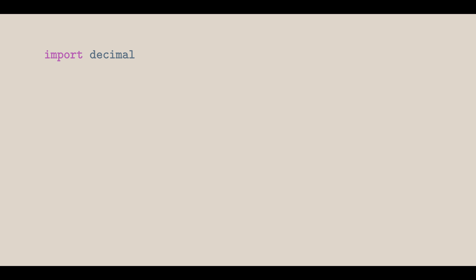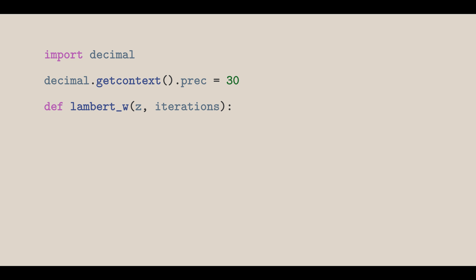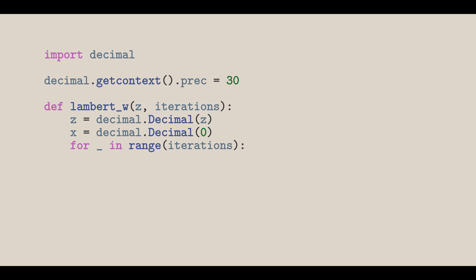Let's implement this in Python. First, let's import the decimal module to handle decimals to any desired precision. Let's use a precision of 30. Then define the Lambert W function, which takes in a value for z and the amount of iterations. Let's cast z to the decimal type so it can work with other decimal types, and set the starting value for x to be 0. For each iteration, we will need to compute e to the x multiple times, so we can compute it once and store it in a variable instead.